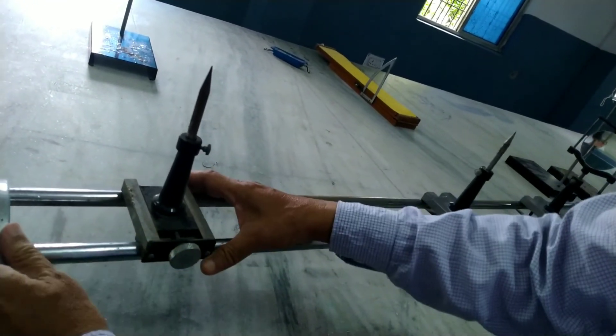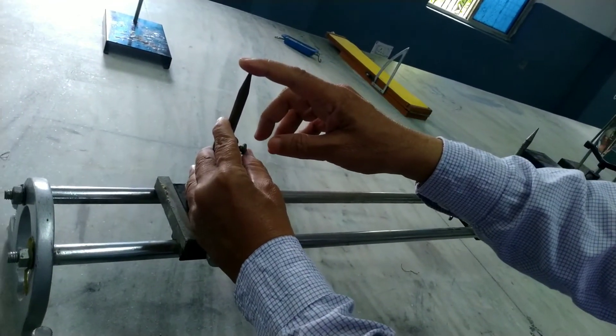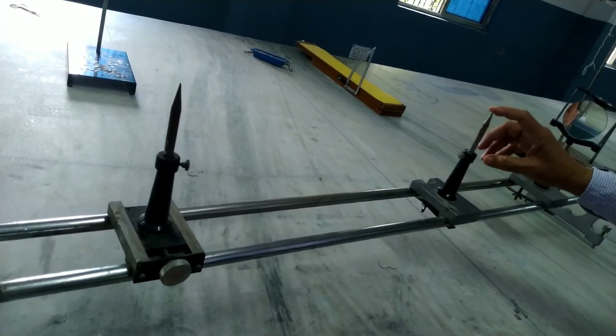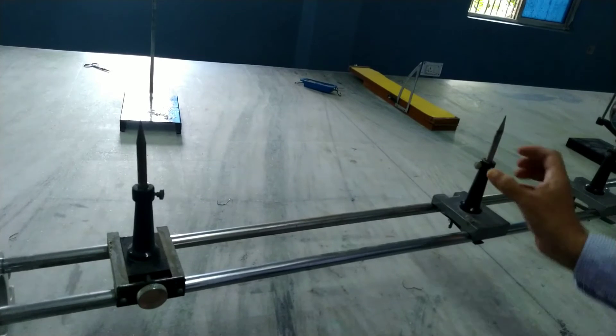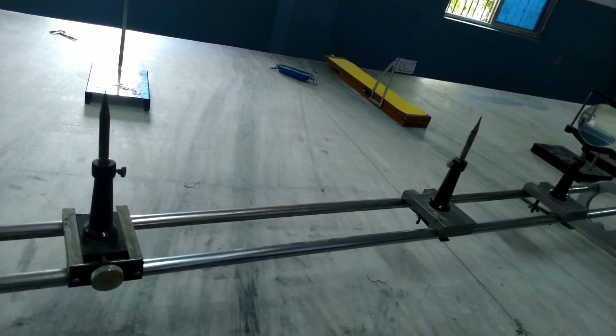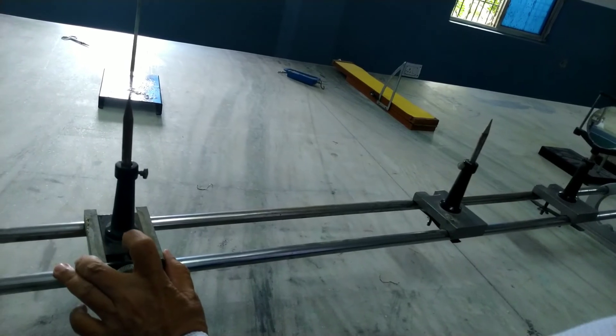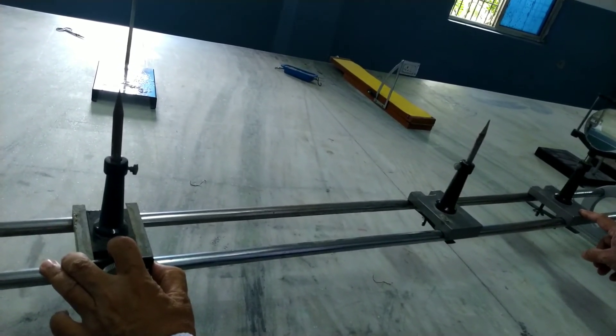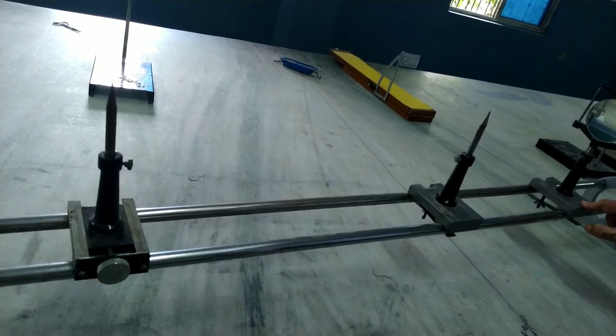Now we focus the tip of the image pin that should coincide with the tip of the object pin. That would give the position of image. So the distance between the image pin and the mirror gives the value of v.